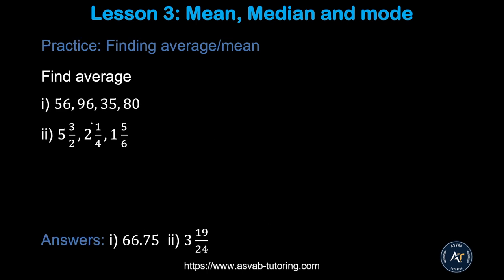There are a couple of practice problems for you to try by yourself. Make sure that you get the same answers: 66.75 and 3 and 19 over 25.